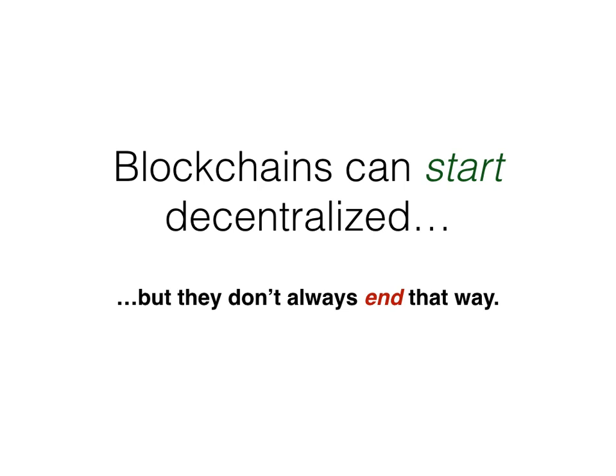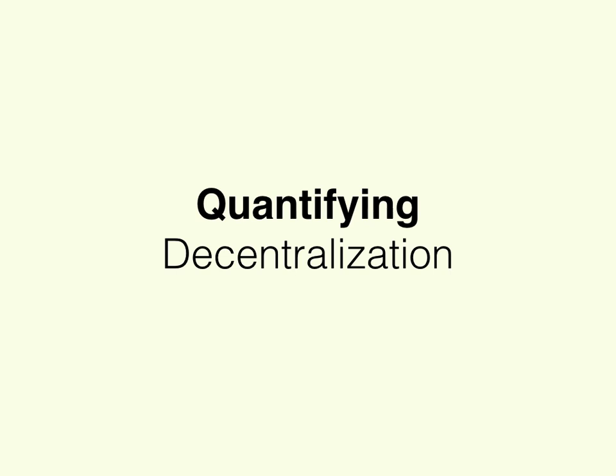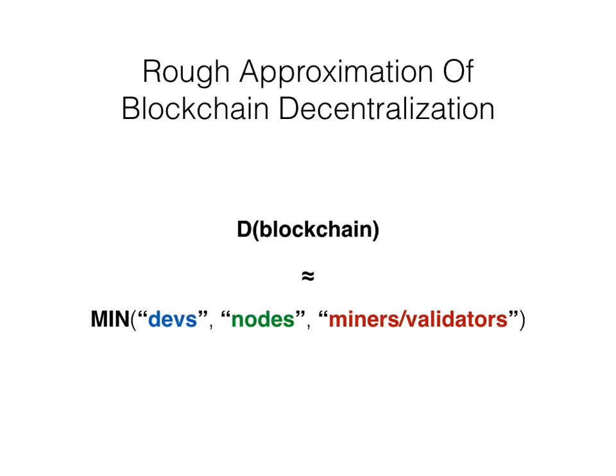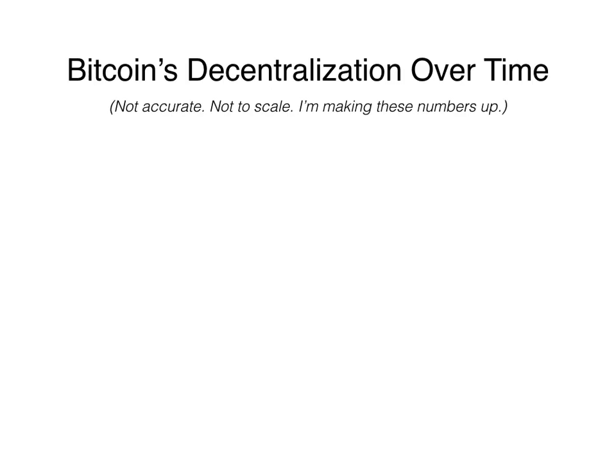Blockchains can start decentralized, but they don't always necessarily end up that way. So it's important to be able to quantify the decentralization of a system. In the case of blockchains, we can come up with a metric: the decentralization of a blockchain is the number of doors that need to be knocked on to compromise the system — in other words, the minimum of the number of developers who have control over the code, the number of nodes supporting the network, and the number of miners and validators securing the network.